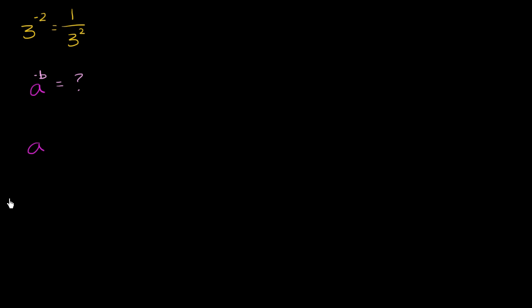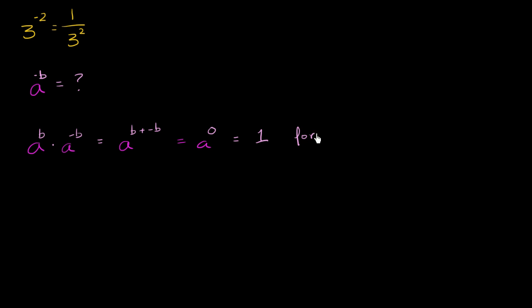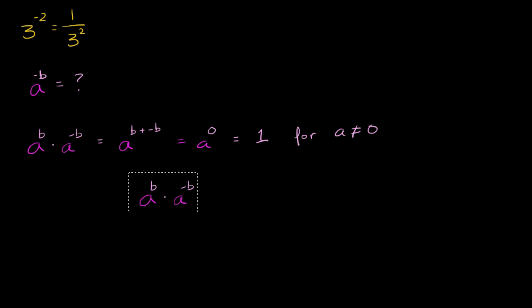We want to maintain this property: a to the b power times a to the negative b power should be equal to a to the b plus negative b power, which of course is going to be equal to a to the zeroth power. And as long as a does not equal zero, this should be equal to 1. So in general, a to the b times a to the negative b should be equal to 1.